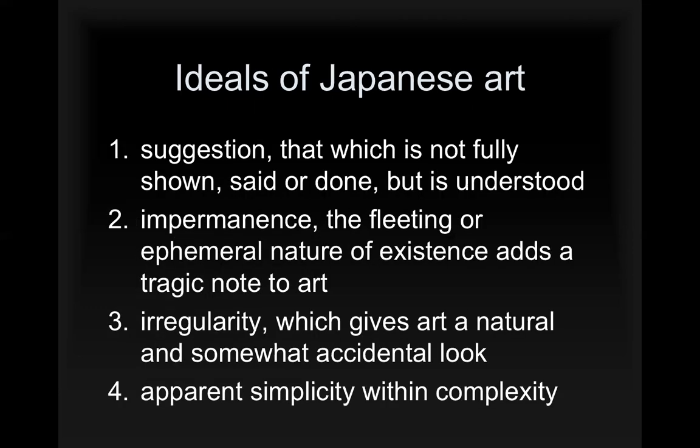Some of the ideals of Japanese art — and this is from our textbook O'Reilly, which does a really good job in this section — the first one is suggestion: that which is not fully shown, set, or done but is understood. This is something you see even in modern Japanese culture, and it explains why certain things are popular in Japanese culture. One good example is baseball.